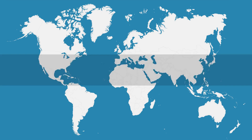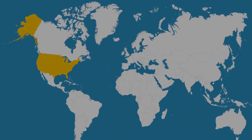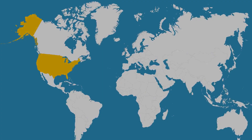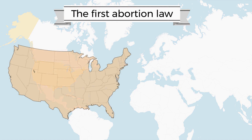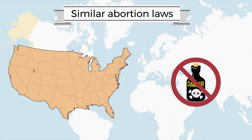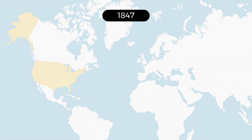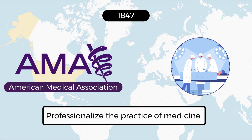The rise of anti-abortion laws: the first abortion law was codified in the state of Connecticut in 1821, forbidding the use of poisons in abortion. Following Connecticut, other states created similar restrictions. In 1847, the American Medical Association was founded as an attempt to professionalize the practice of medicine.